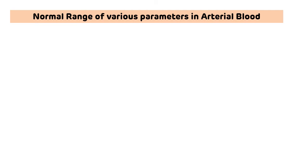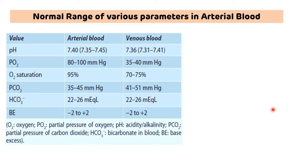Now we will review the normal range of various parameters in arterial blood. You must remember these values as they are essential for ABG interpretation and case studies. Normal arterial pH: 7.35–7.45. Normal arterial PO2: 80–100 mmHg. Normal O2 saturation: 95%. Normal arterial PCO2: 35–45 mmHg. Normal arterial bicarbonate: 22–26 mEq/L. Normal base excess: −2 to +2.